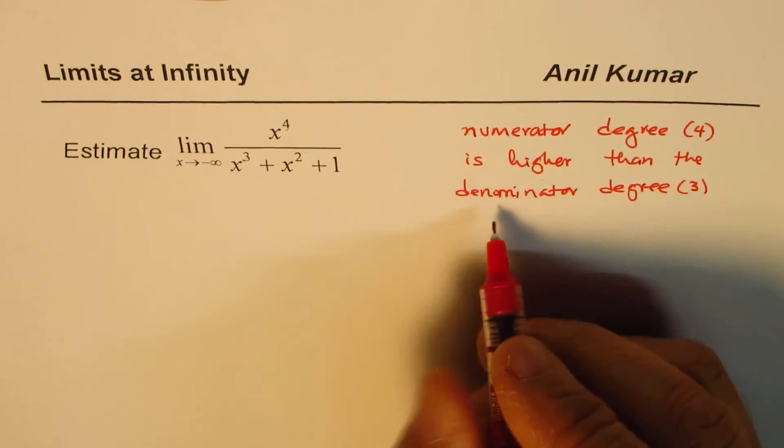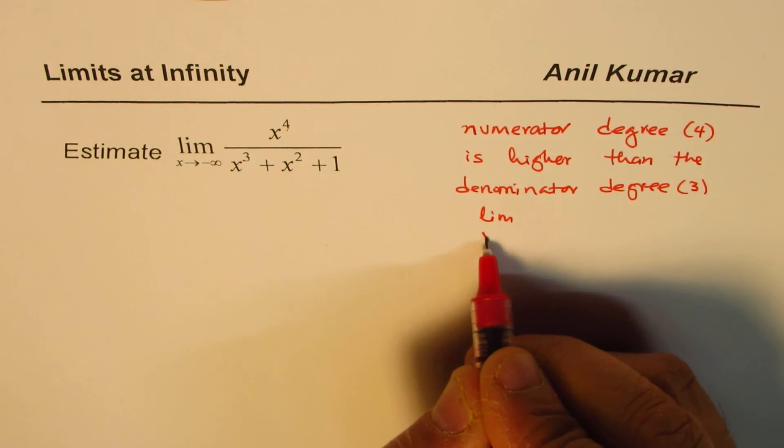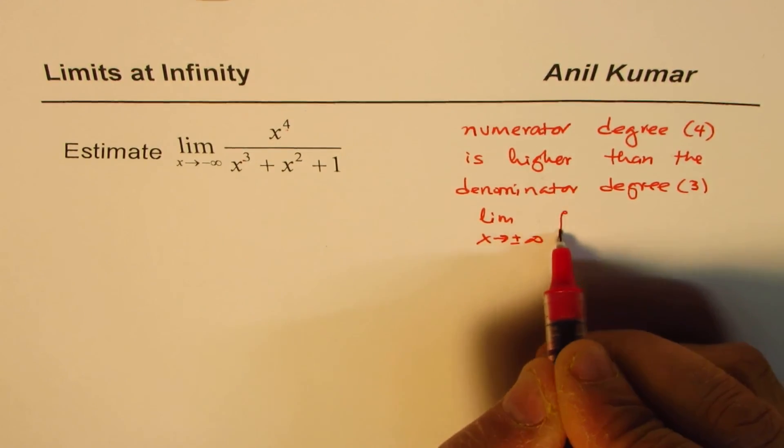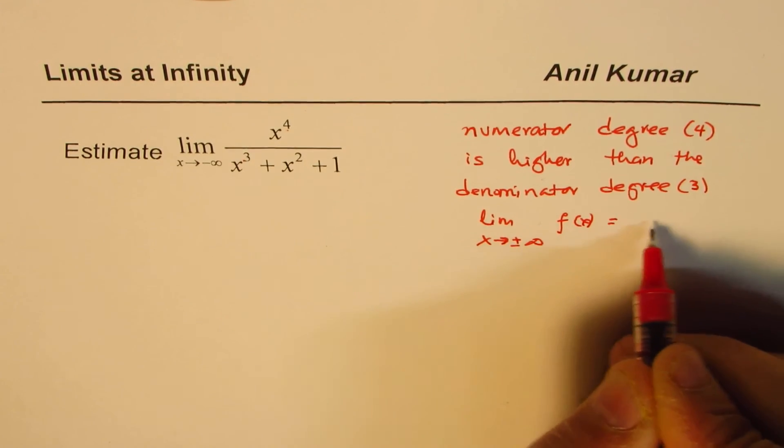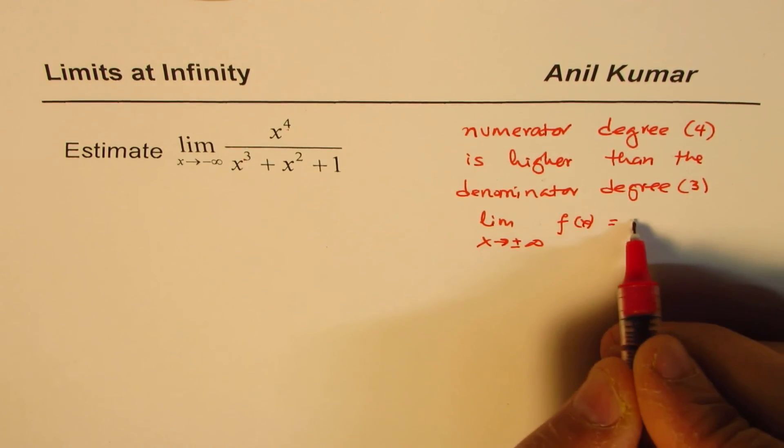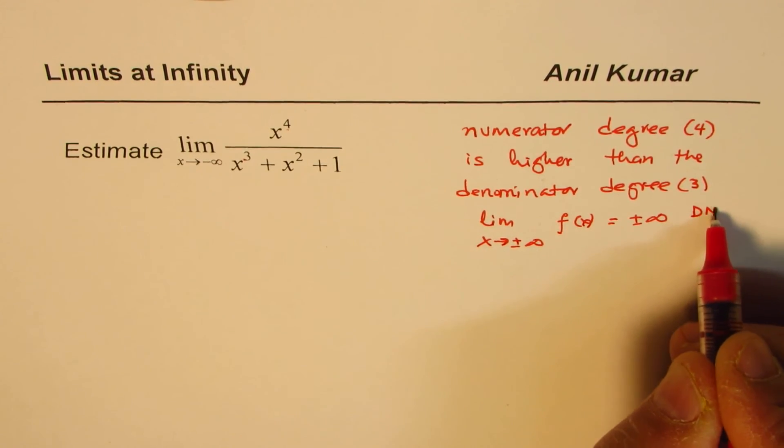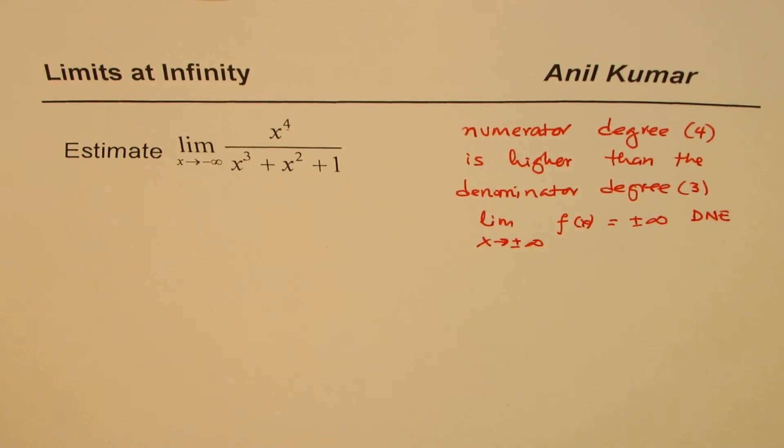In that case, we expect that limit as x approaches, whether it approaches positive or negative infinity, for the rational function as positive or negative infinity, as the case may be. But you can say it does not exist, because going infinitely large could be positive or negative, depending on the scenario.